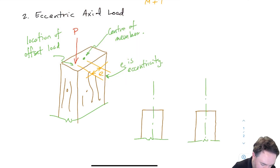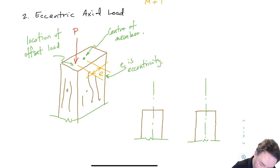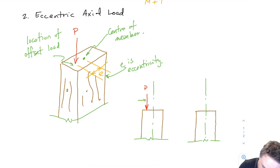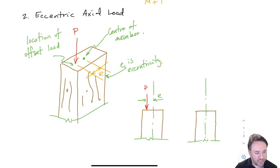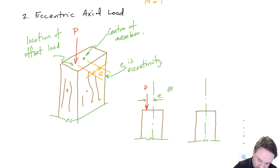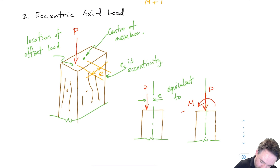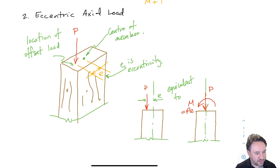Why does eccentricity cause a moment? If I have load P applied at eccentricity E, that is equivalent to having P at the center combined with a moment equal to P times E. The distance between the neutral axis and the load — the eccentricity — creates an effective moment P·E, because we need to resist that with a couple.